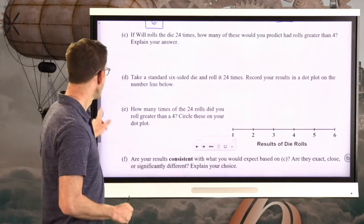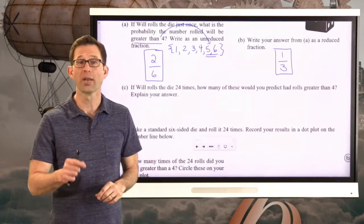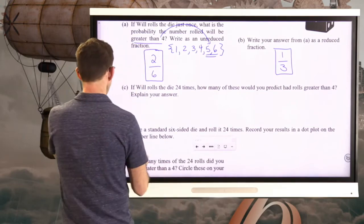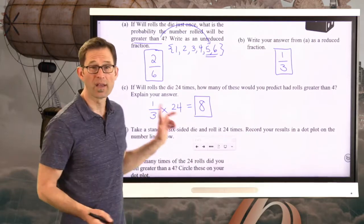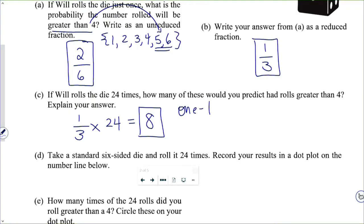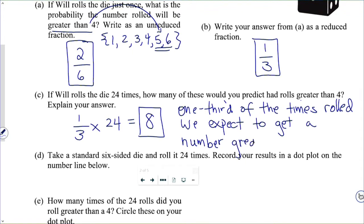Well, the idea that we just found was 1 third of the time we should get a number greater than 4. That means that if we roll the die 24 times, and 1 third of the time we should get a number greater than 4, then we should have 8 times. Explain your answer: 1 third of the times rolled, we expect to get a number greater than 4.